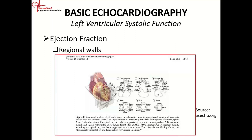In the apical three-chamber view or long-axis view, you have the anterior septum on one side and the inferior lateral on the other. Again, divided into three levels: basal anterior septum, mid-anterior septum, apical anterior septum. And basal inferior lateral, mid-inferior lateral, and apical inferior lateral. There's a clear pattern — you don't need to memorize every detail, just understand the concept.